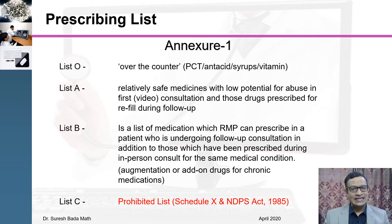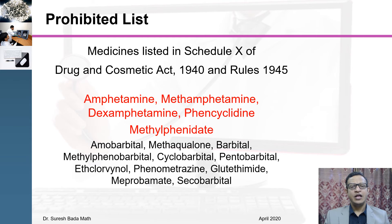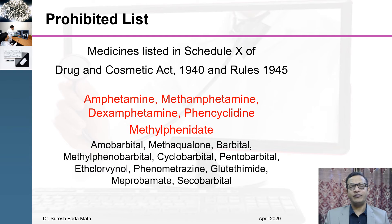Coming to List C — this is the list which has been prohibited under telemedicine consultation. List C basically covers Schedule X under the Drugs and Cosmetics Act of 1940 and Rules 1945, as well as drugs listed under the NDPS Act of 1985. Both these lists are addictive, habit-forming, or dependence-forming drugs. Examples from Schedule X include amphetamine, methamphetamine, dexamphetamine, phencyclidine, methylphenidate, and various others.